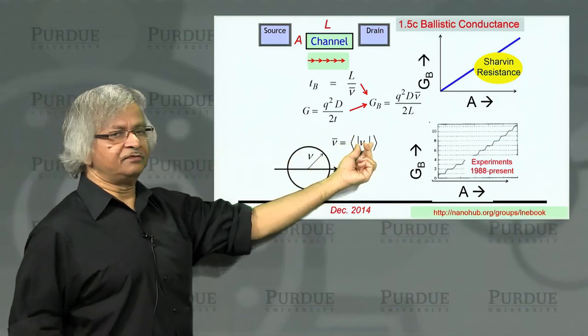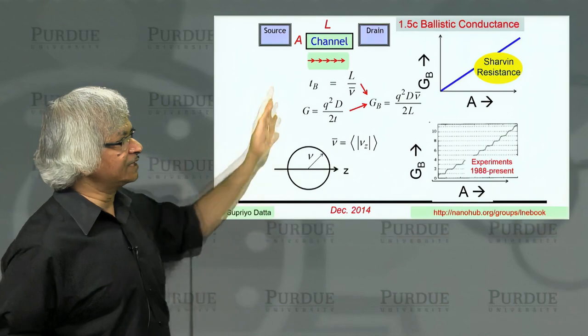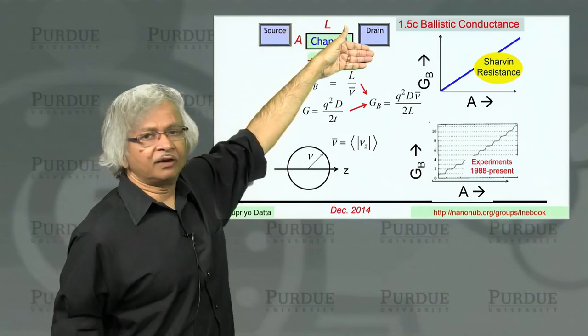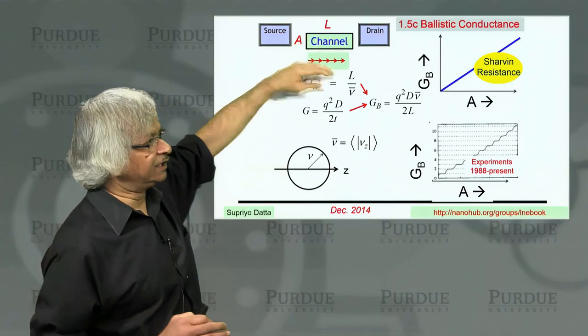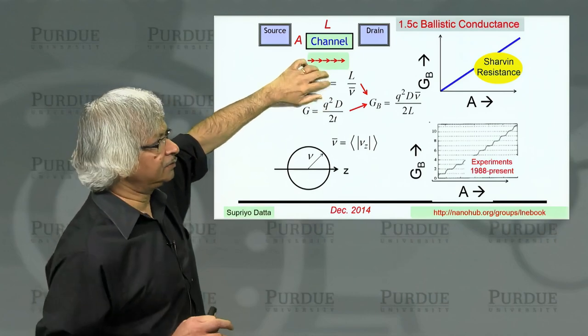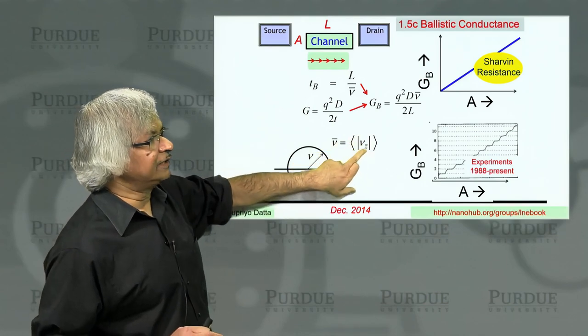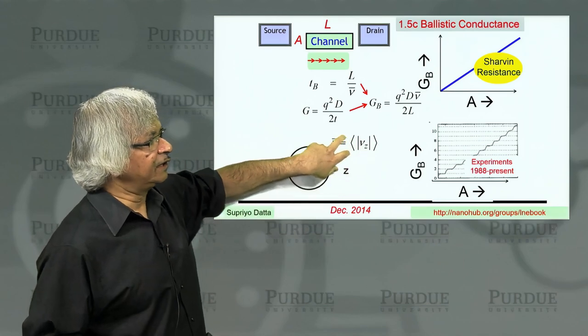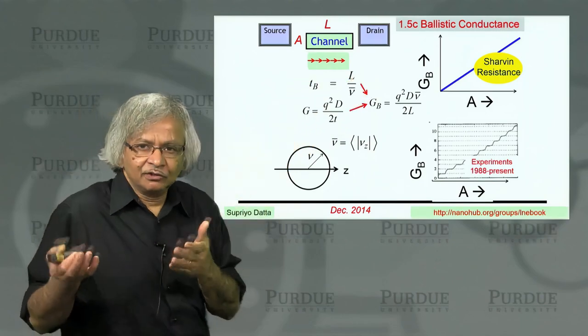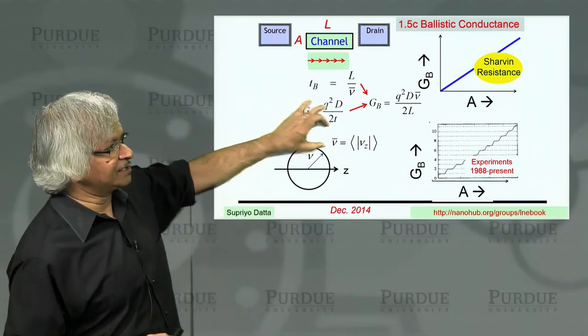Now, of course, if you just take the average of vz, the answer would have been 0 because you have vz in every direction. But here for ballistic transport, we are interested in the average velocity of carriers going from left to right. And because you have applied a voltage, there are no electrons going from right to left. So this is what the average velocity is. It's the average of the absolute value of vz, only the average of those that are going to the right. If you took them all together, the answer would have been 0. But here, this is what we are interested in.